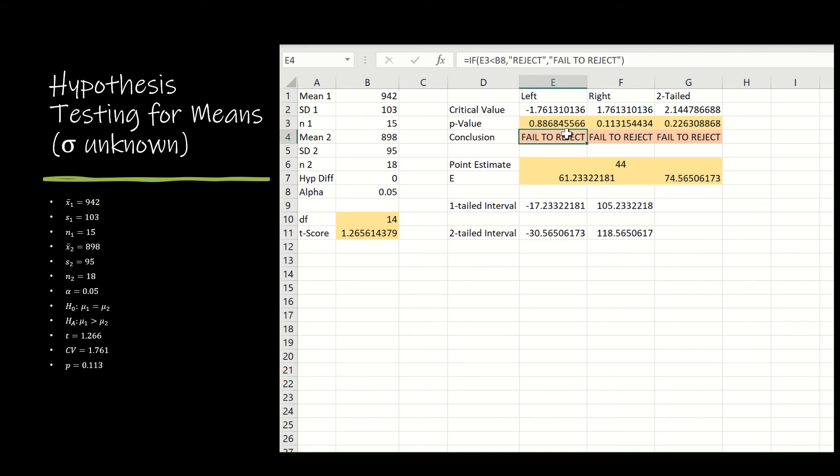Again, feel free to geek out and use the if-thens for reject and fail to reject, which would compare our p-value and our alpha levels.